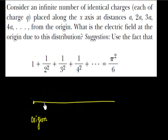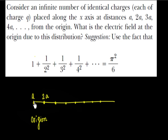There are charges that are placed. One charge is placed at x equals to a, another at x equals to 2a, another at x equals to 3a, 4a, 5a, 6a, 7a. So this is x equals to a, this is x equals to 2a, and this is basically the origin, x equals to 0.